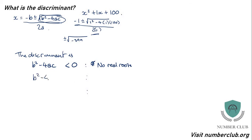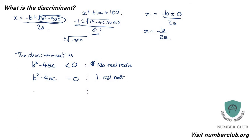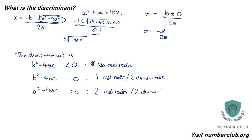If b squared minus 4ac equals exactly 0, then your quadratic formula gives x equals negative b plus or minus 0 over 2a, which means x equals negative b over 2a. There's only one solution — plus or minus 0 means nothing changes — so in this case you get one real root, sometimes called two equal roots. And for b squared minus 4ac being greater than 0, you get two real roots, sometimes called two distinct real roots.